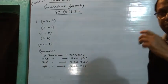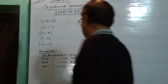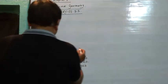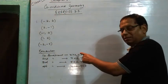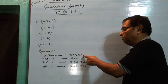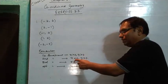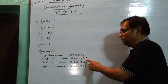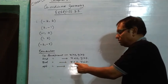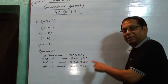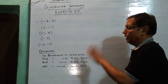Before answering this question, you should remember this fact. In the first quadrant, X is positive and Y is positive. In the second quadrant, X is negative and Y is positive. In the third quadrant, X is negative and Y is negative. In the fourth quadrant, X is positive and Y is negative.